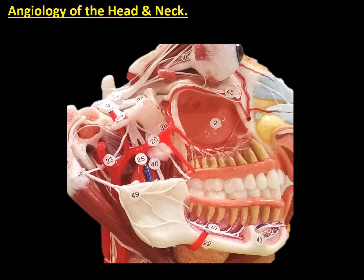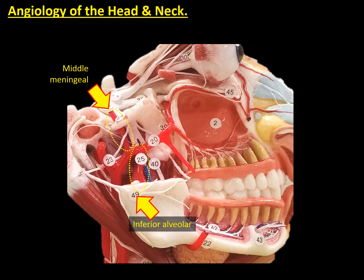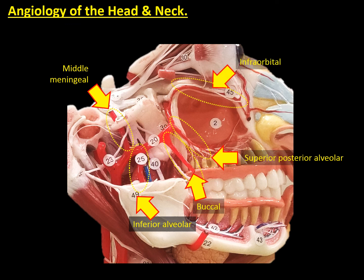Regarding the maxillary artery, we can observe the following branches. The first one, and most lateral, is the middle meningeal artery, which is crossing the foramen spinosum into the middle cranial fossa. Then we can observe, in an inferior projection, the inferior alveolar artery, which is going into the mandible to keep blood supply to the inferior teeth. Next, we have the posterior superior alveolar artery, which is going to keep blood supply to the posterior teeth. The maxillary artery is also creating a branch called the infraorbital artery that goes into the orbit through the inferior orbital fissure and makes branches to the anterior teeth. Finally, the maxillary artery is creating a small terminal branch crossing the sphenopalatine foramen, called the sphenopalatine artery.